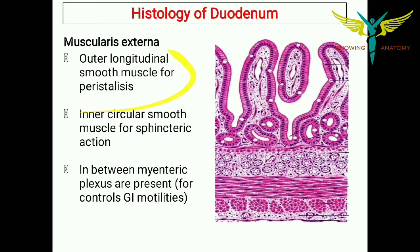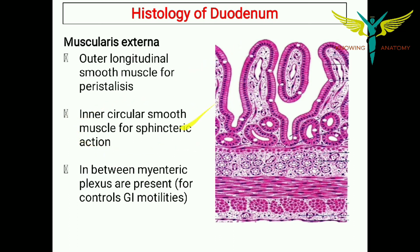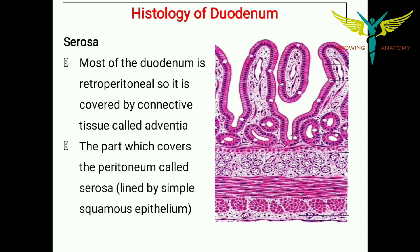Coming to the muscularis externa, similar to the muscularis mucosa, it also has an outer longitudinal layer for peristalsis and an inner circular smooth muscle layer for sphincteric action. In between the outer longitudinal layer and the inner circular layer of smooth muscles there is a plexus called the myenteric plexus, which controls GI motility.